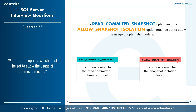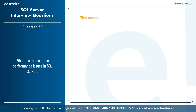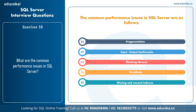The final question is: what are the common performance issues in SQL Server? This is a practical question based on experience. Common performance issues include fragmentation, I/O bottlenecks, blocking, queues, deadlocks, and unused indexes. You can also mention other issues you've encountered, and it's best to explain with examples — describe the scenarios where you saw performance issues and how you resolved them.